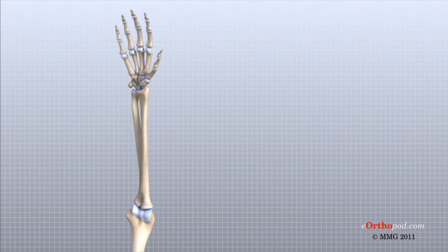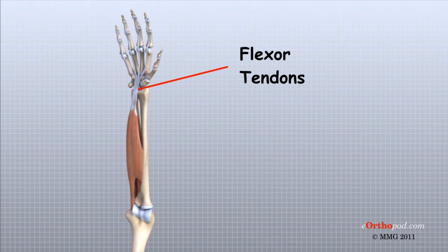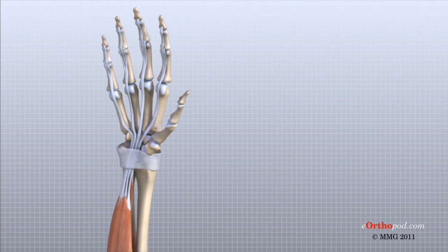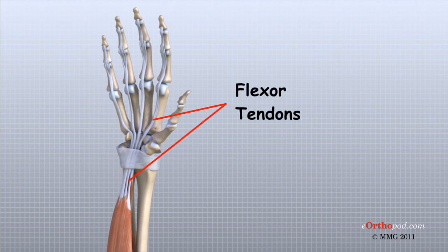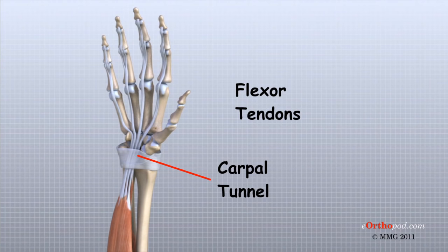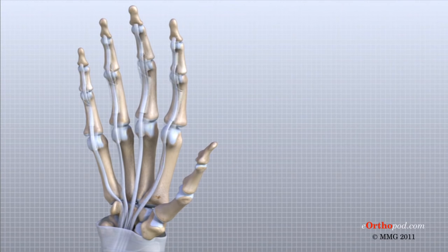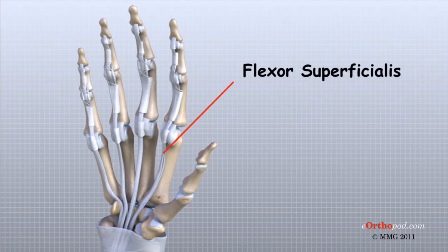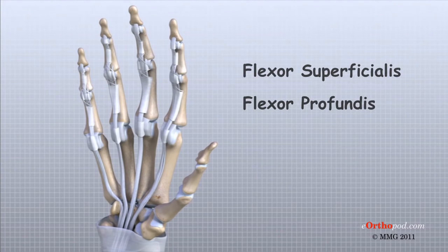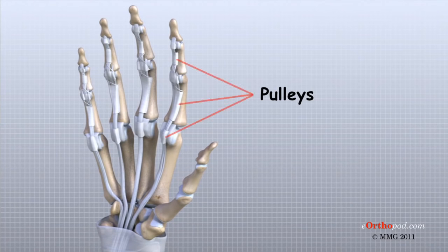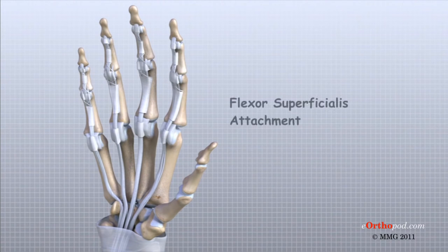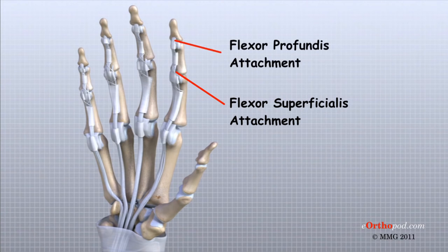The flexor tendons allow the fingers and thumb to flex or bend to grip objects in the palm of the hand. The strong flexor muscles begin in the forearm, and just before they enter the wrist, the flexor muscles form the flexor tendons. The flexor tendons travel through the carpal tunnel, through the palm, and two tendons each travel into the volar side of each finger. These two tendons, the flexor superficialis and flexor profundus, travel through a special tunnel formed by a series of specialized ligaments that form pulleys. The flexor superficialis connects to the base of the middle phalanx, and the flexor profundus tendon connects to the base of the distal phalanx.